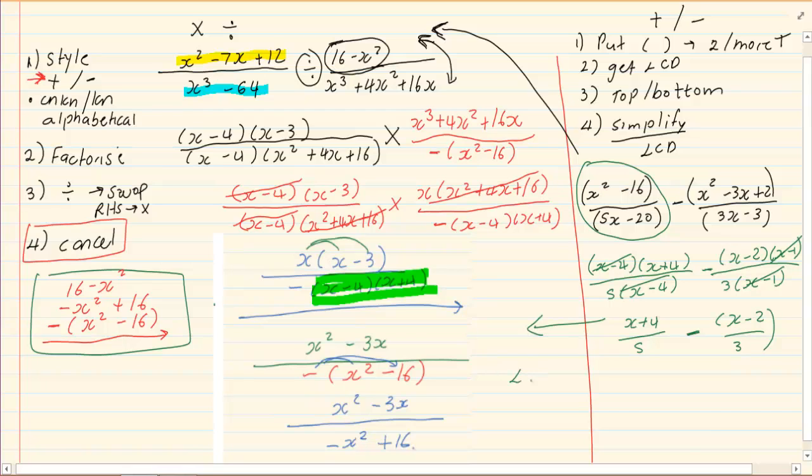Our LCD is 5 and 3 which is 15. So, I am going to multiply the 5 with the 3 and I am going to multiply the 3 with the 5.